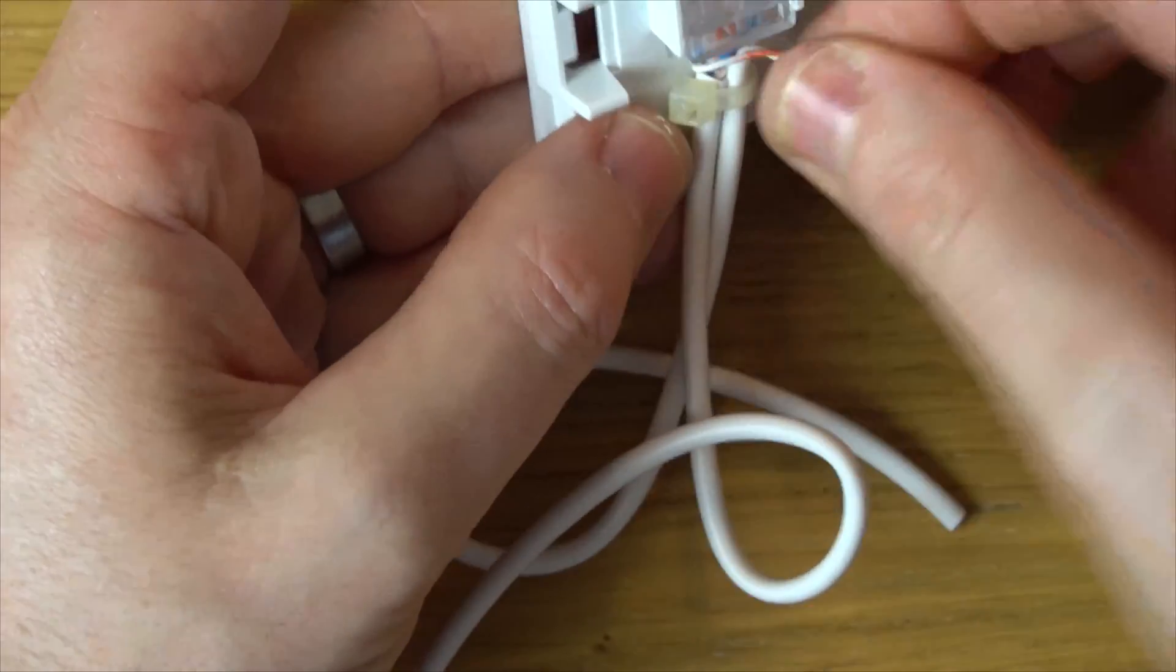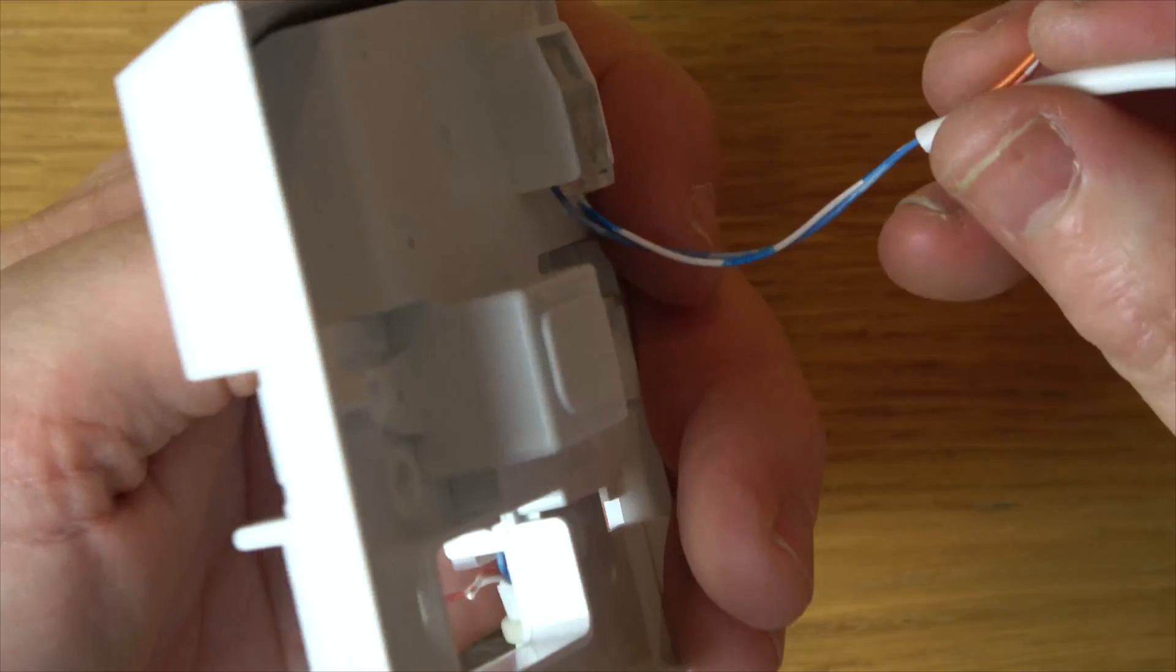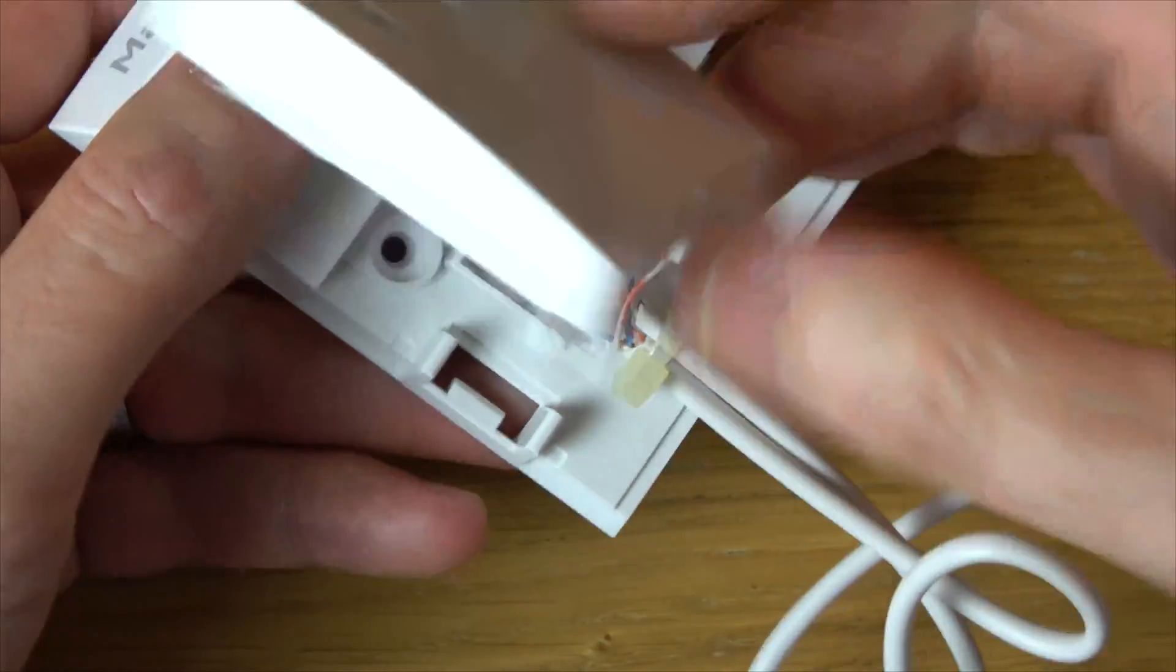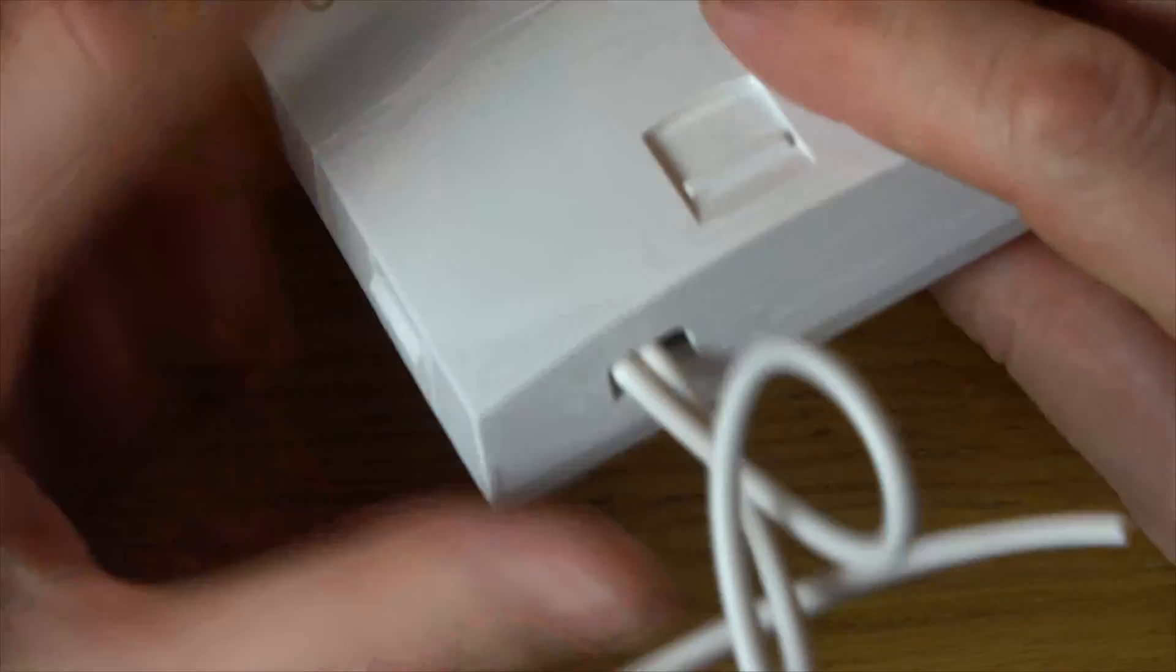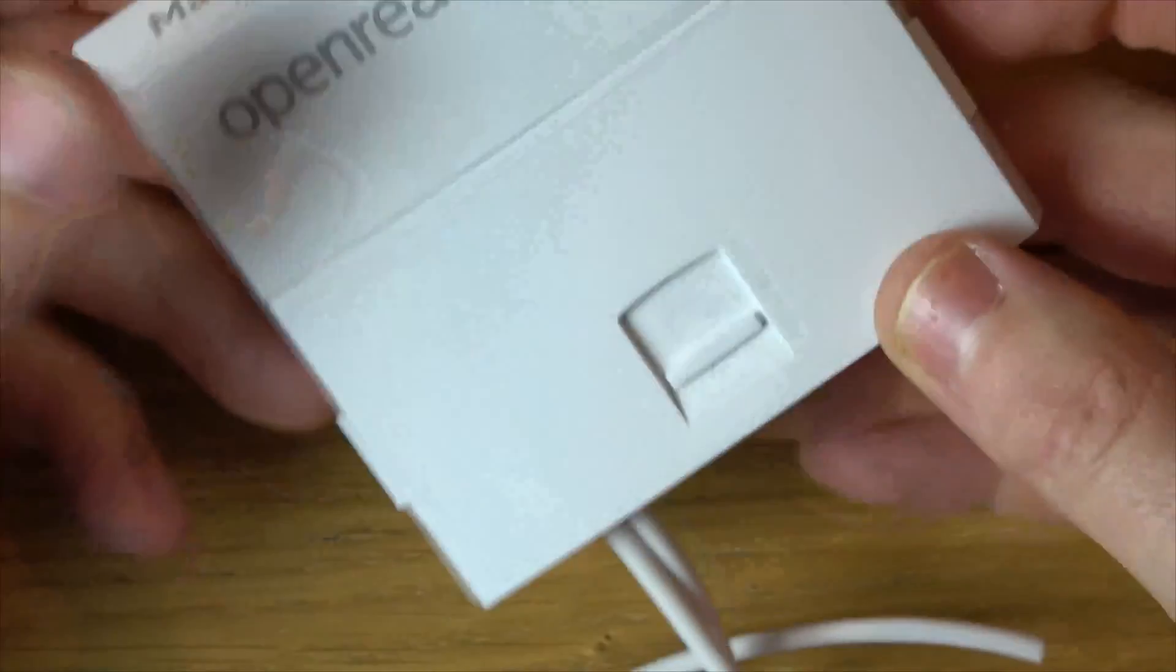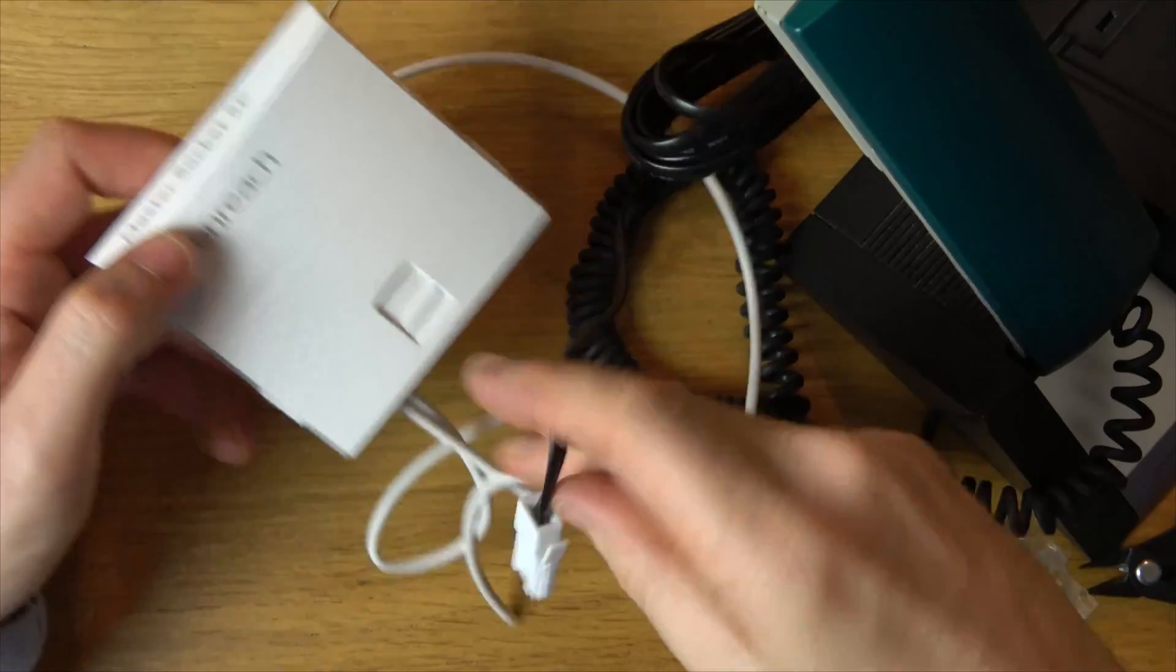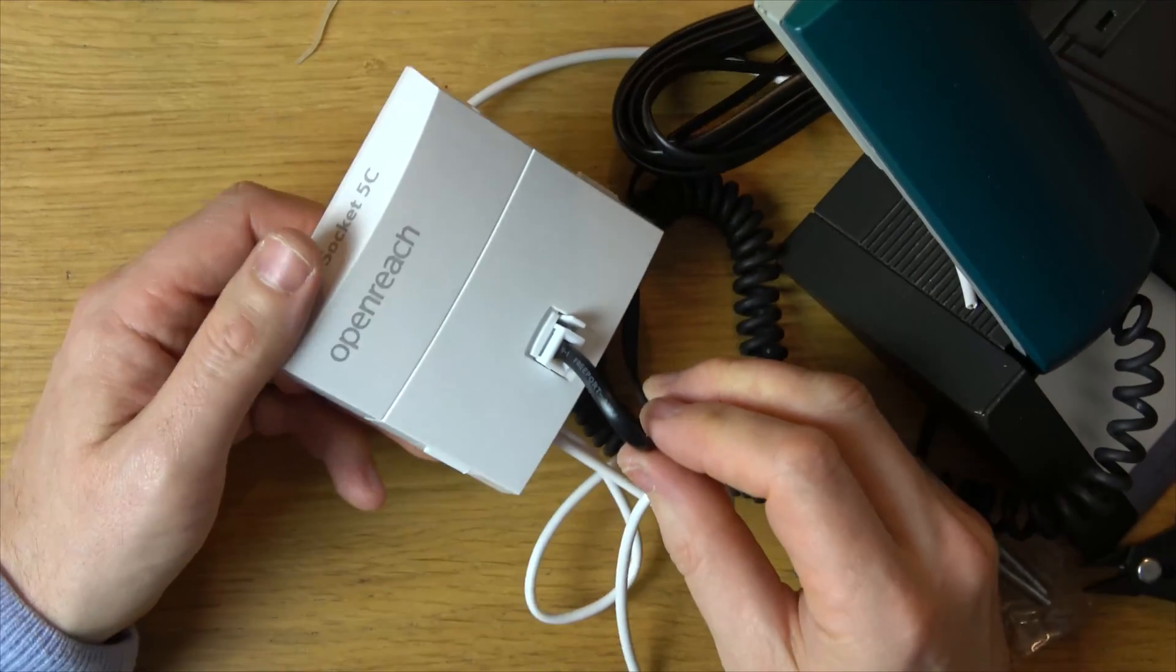We have our incoming wire going here and then these are extension wires. We're going to be clipping this on here like so, and you can see this is where the extensions come out. You're going to be plugging your telephone into this part here and hopefully you'll find you have dial tone.